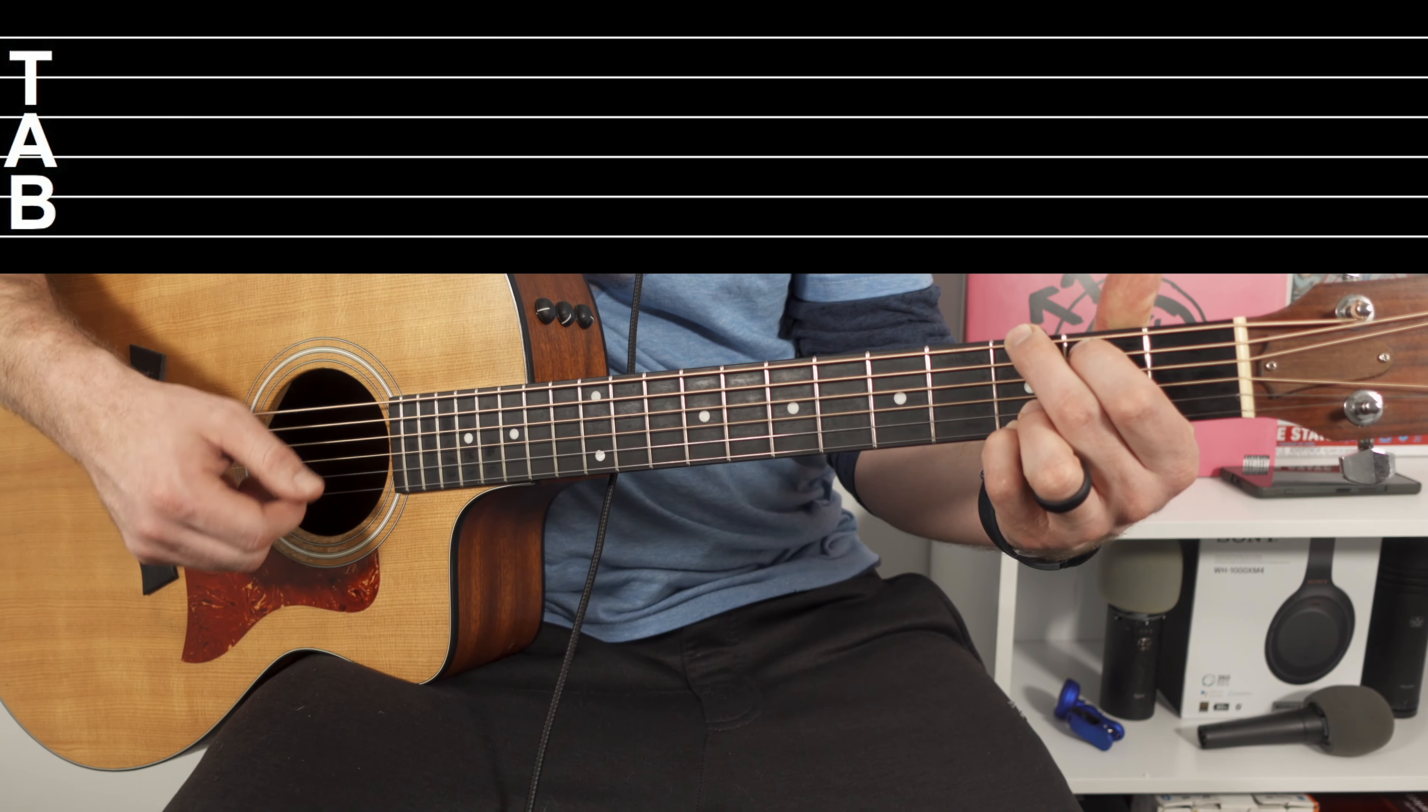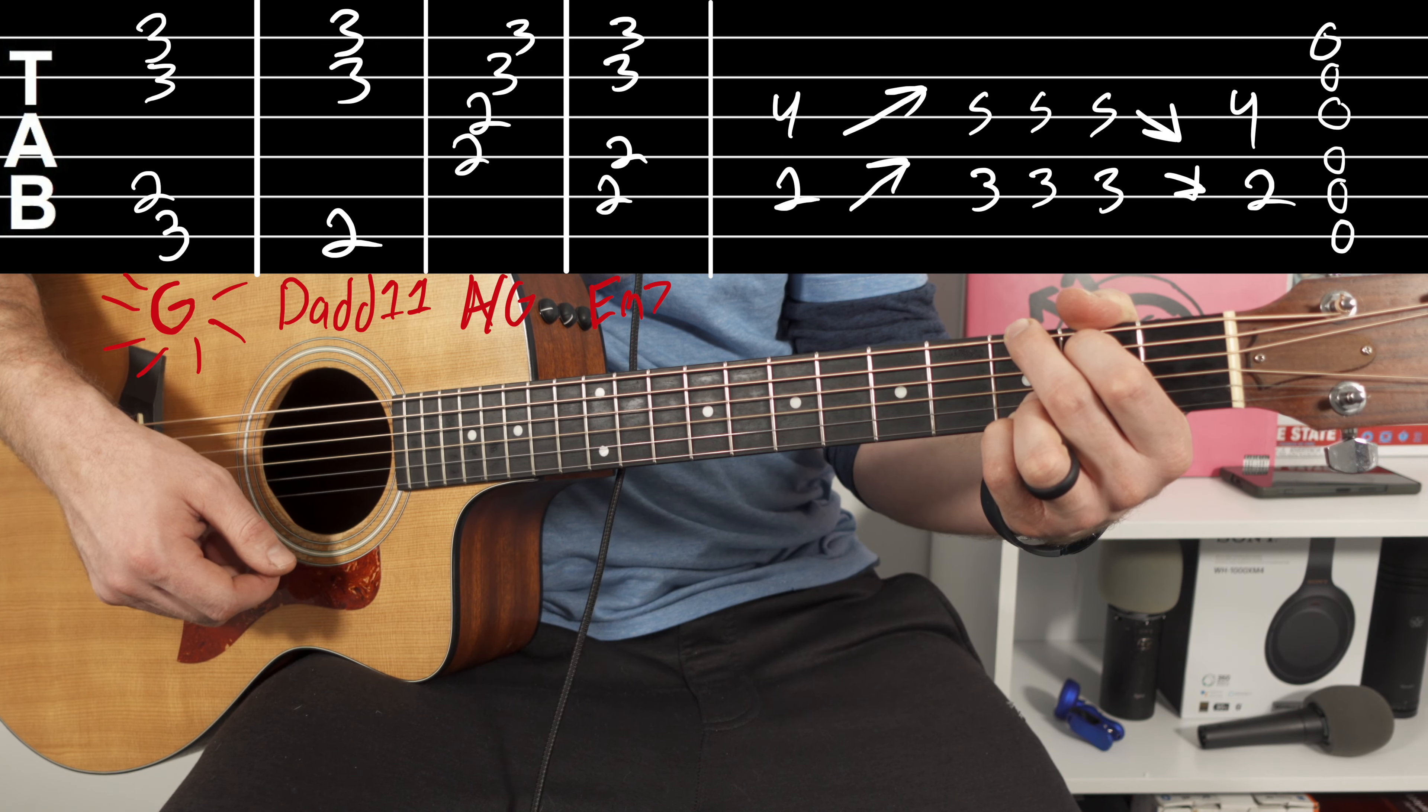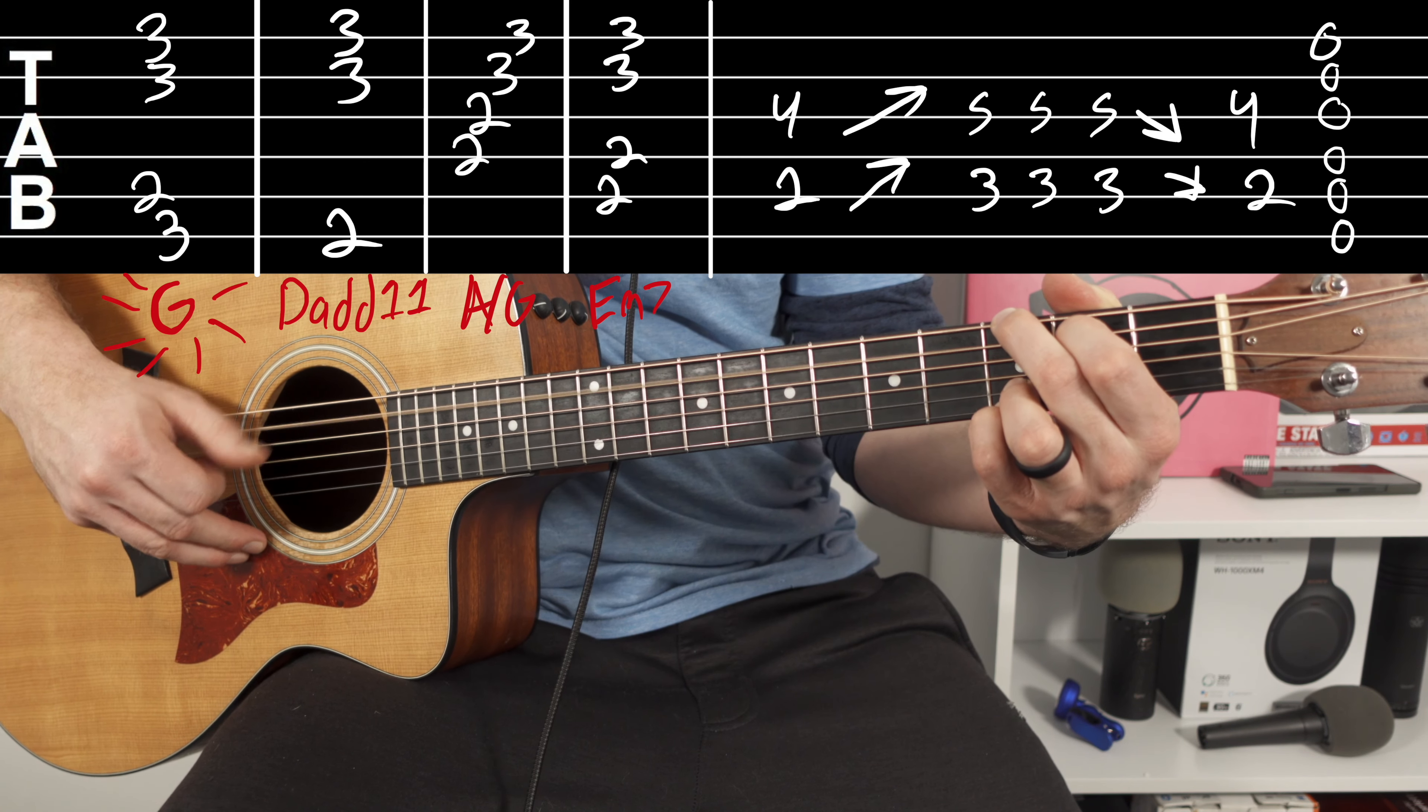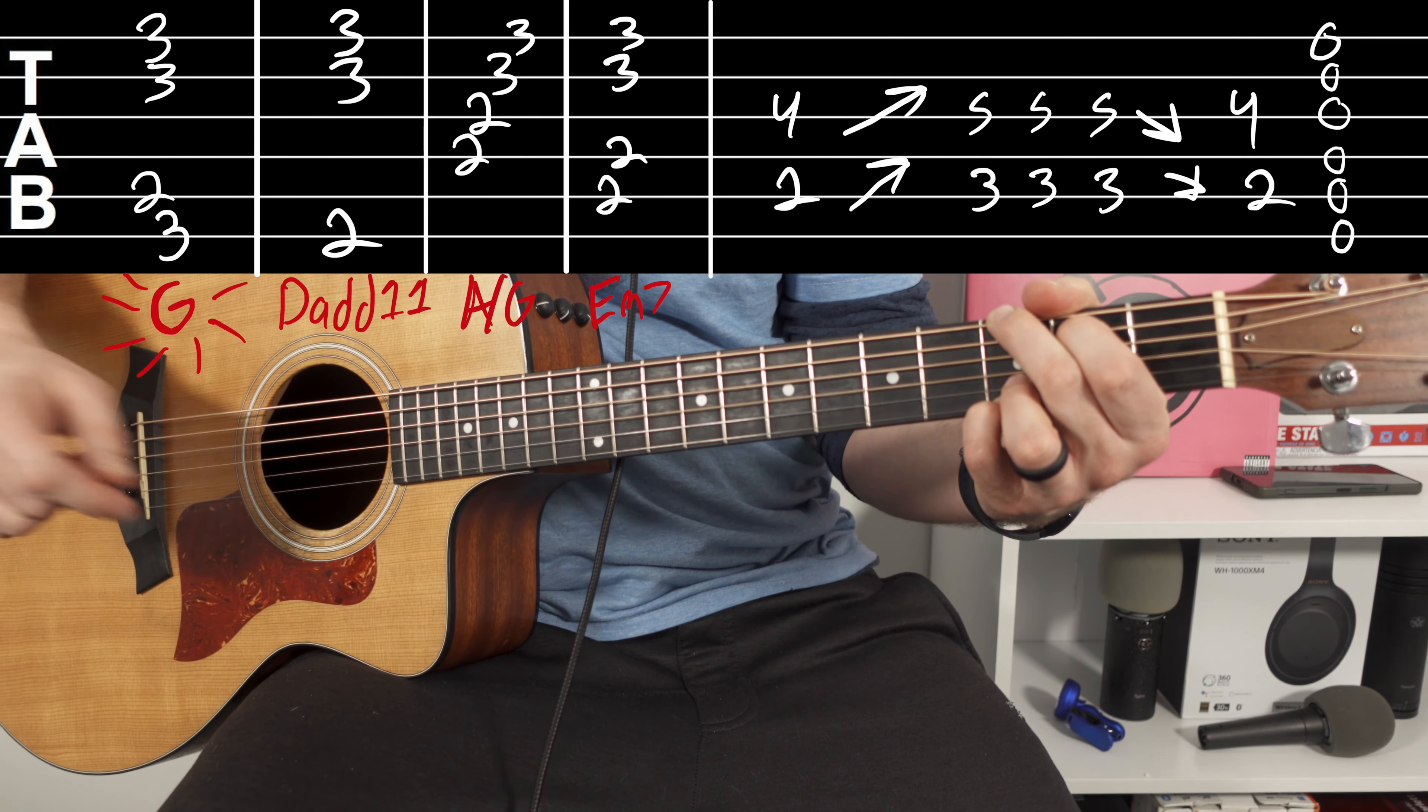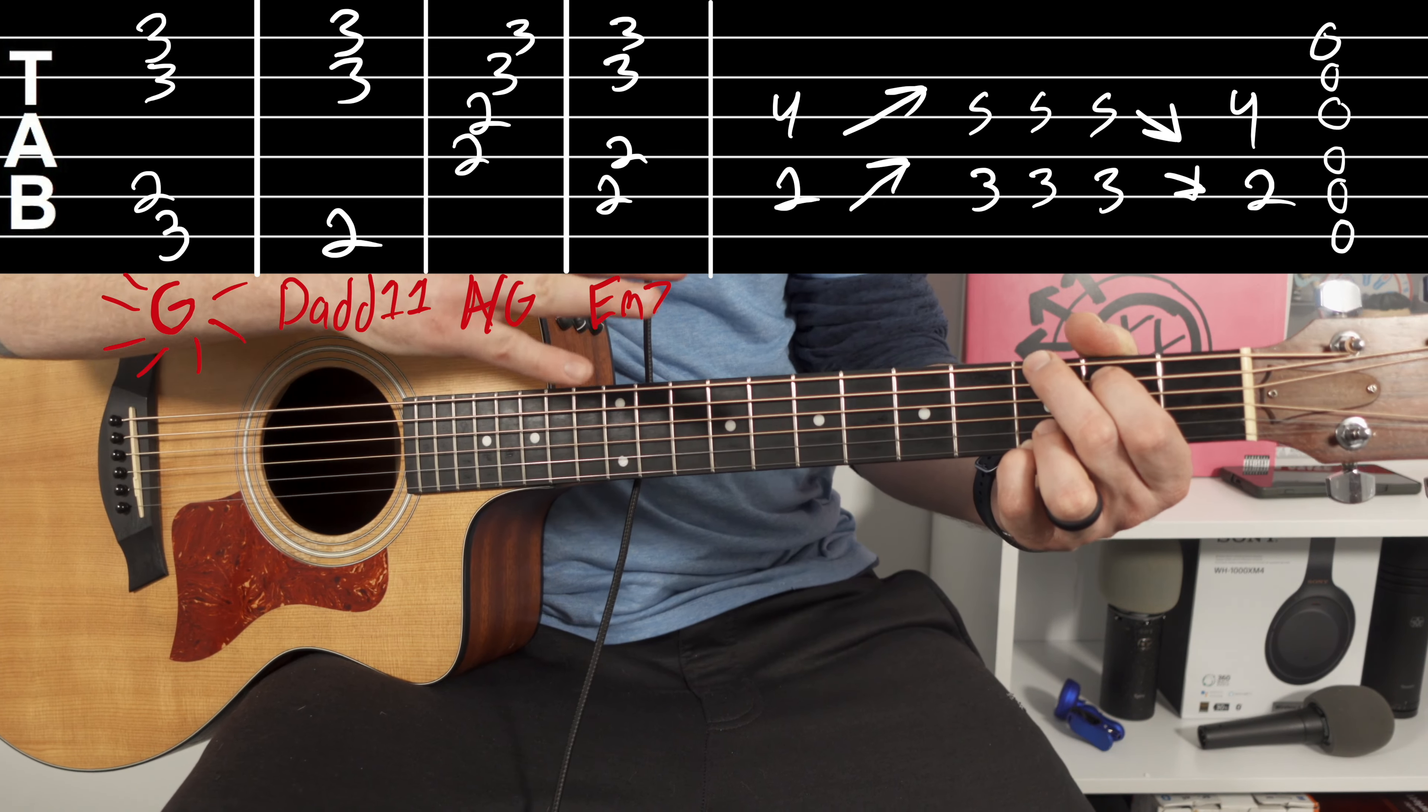The verse is going to start off with G. For those that don't know what the G chord is, it's going to be third fret E string, second fret A string, third fret B string, and then third fret high E. It's going to be all variations of this chord. So I'll just walk you through it real quick.